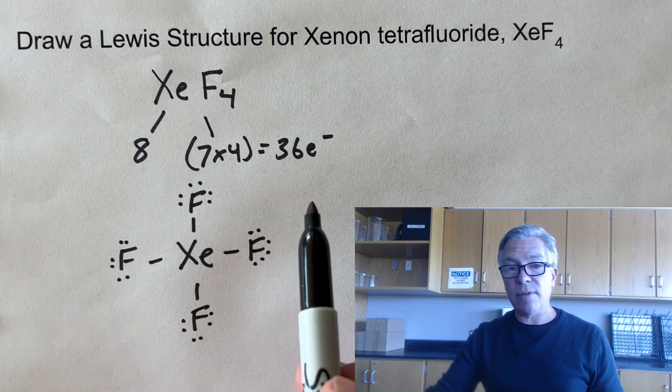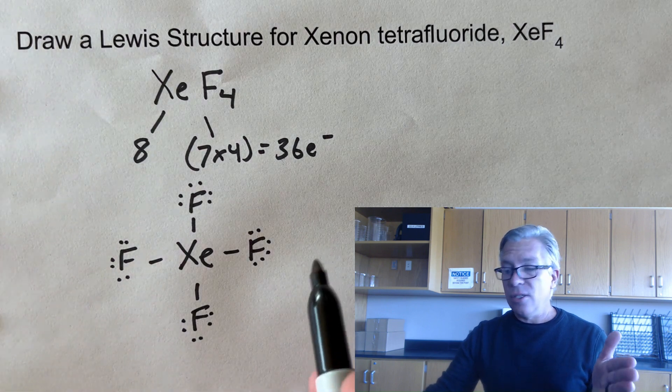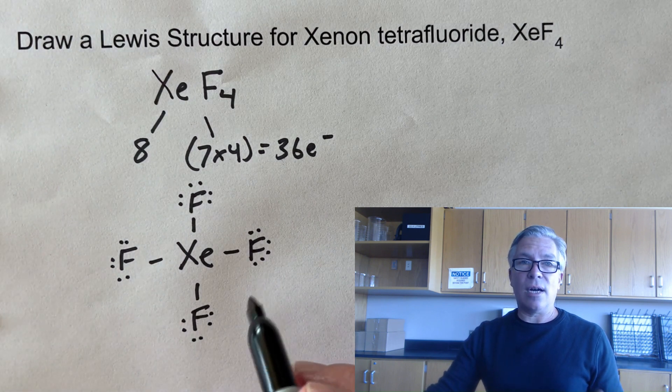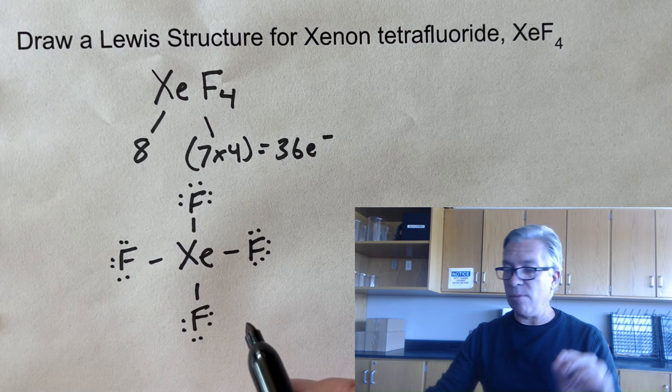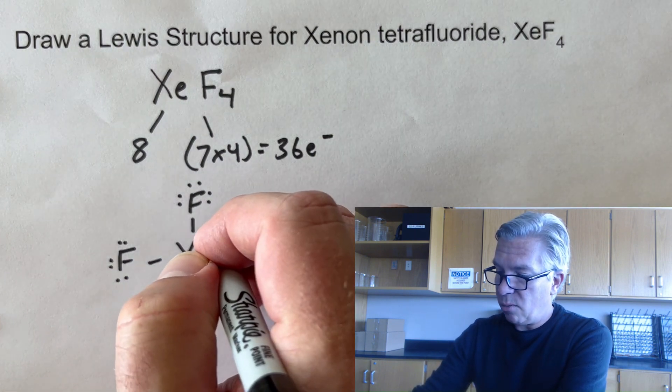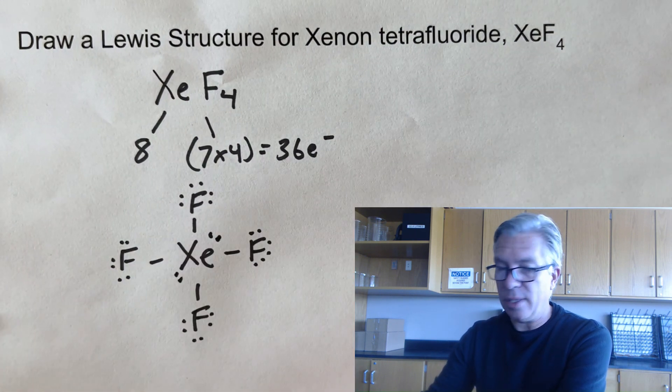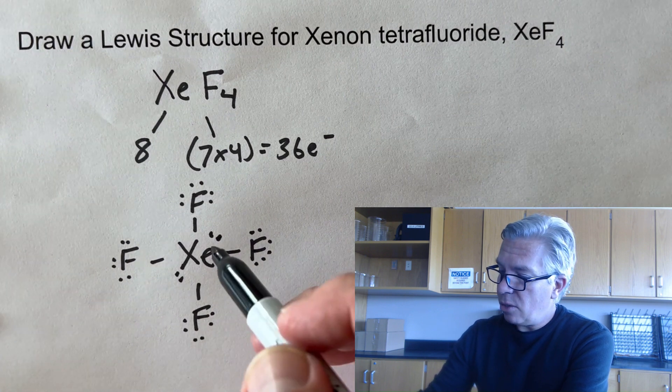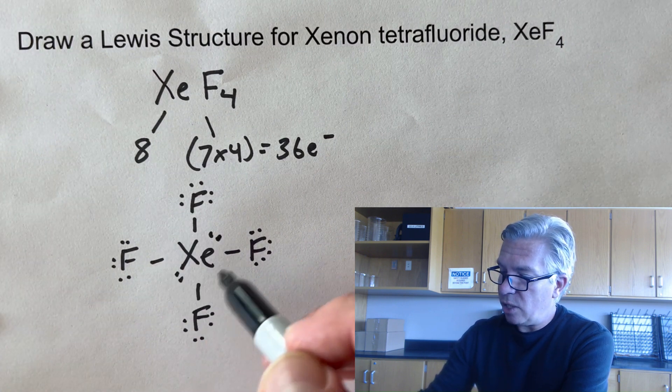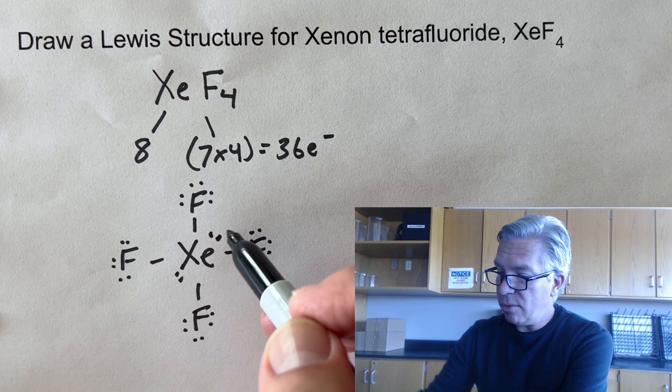Now, step four of our steps says put those extra electrons on the central atom, even if doing so results in having more than an octet. And of course, xenon will have more than an octet because it started with an octet and we added things to it. So we'll put them on there, and here we have a situation where we have four bonds and two lone pairs.